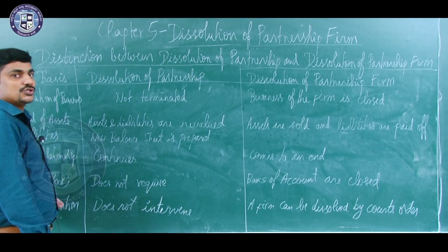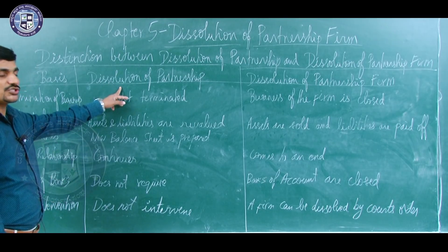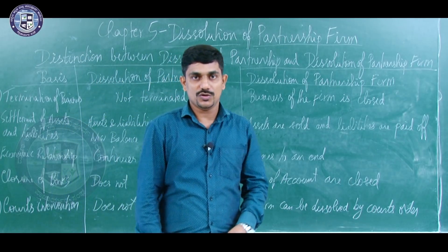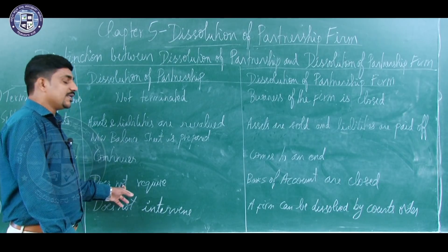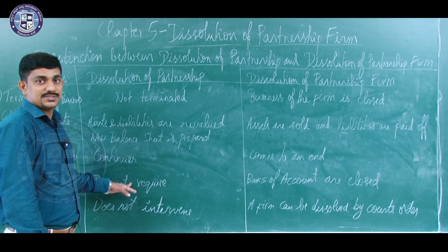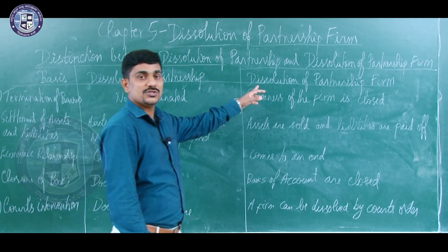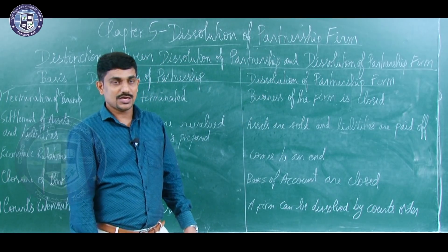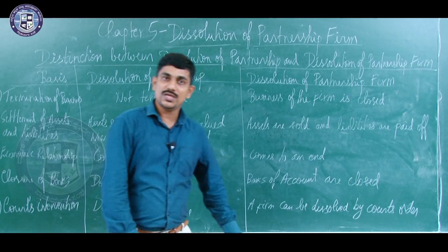The next difference is closure of books. In dissolution of partnership — such as in admission or retirement — the books of account are not closed because the business continues, so the books also continue. But in dissolution of partnership firm, because the business is terminated, the books of accounts must be closed.